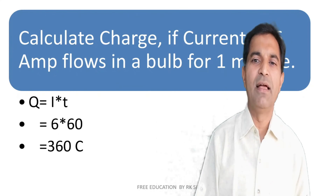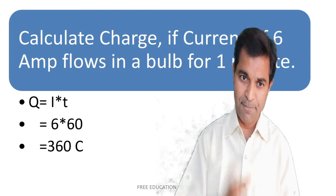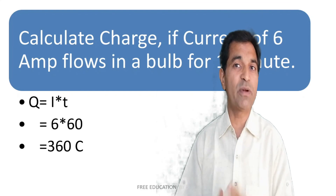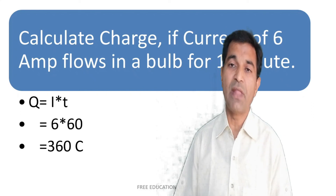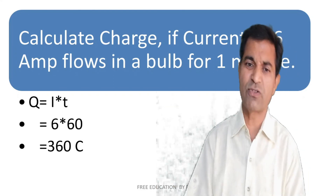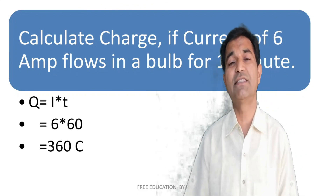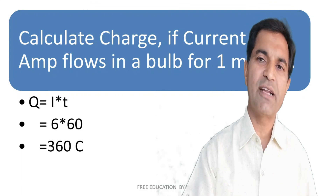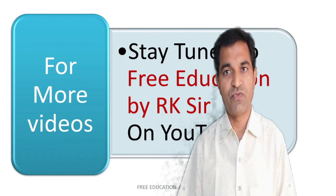Let us solve a simple sum: calculate the charge if a current of 6 ampere flows in a bulb for one minute. We know I = Q / T, so Q = I × T. I is 6 ampere, T is one minute converted to 60 seconds, so Q = 6 × 60 = 360 coulombs. This type of example is generally asked in examinations. Try to solve such examples on your own. Stay tuned for more such videos. Thank you.